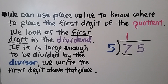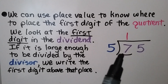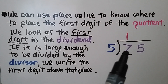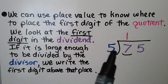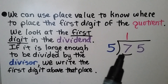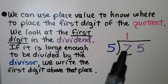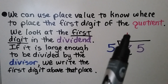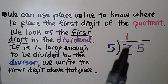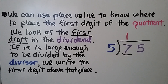We look at the first digit in the dividend. If it's large enough to be divided by the divisor, we write the first digit above that place. For example, five fits into seven one time, so we put the one above the seven.